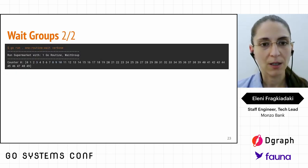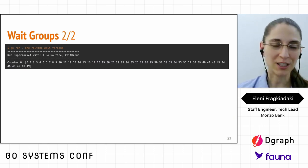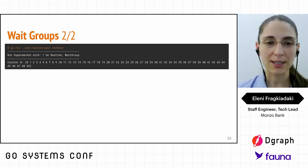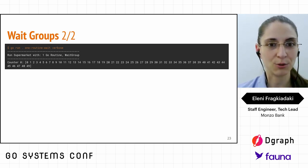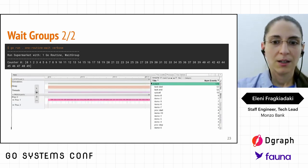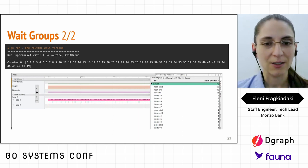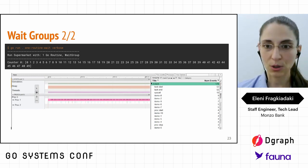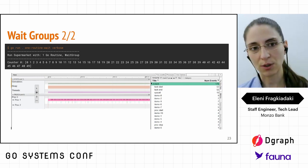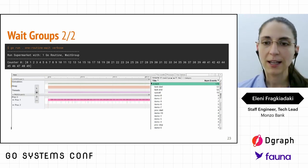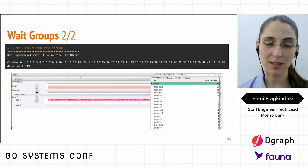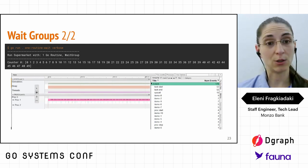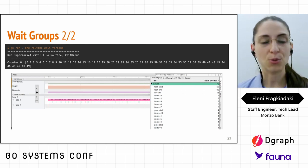Running this again with `go run oneroutine wait verbose`, we see the output: one counter with ID zero, and 50 people successfully processed with IDs from 0 to 49. Looking at the trace tool, we can see goroutines at the top, processes at the bottom, and the processing of all items on the right from our trace logging — which confirms everything is working correctly.